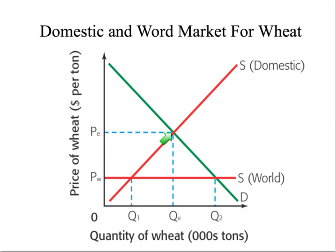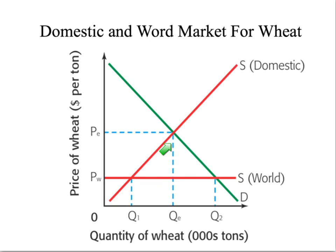As a result of this, there's an equilibrium price of PEQE, which results in an equilibrium price level where U.S. producers are making a nice profit and U.S. consumers are content with the quantity they are consuming at that price level.